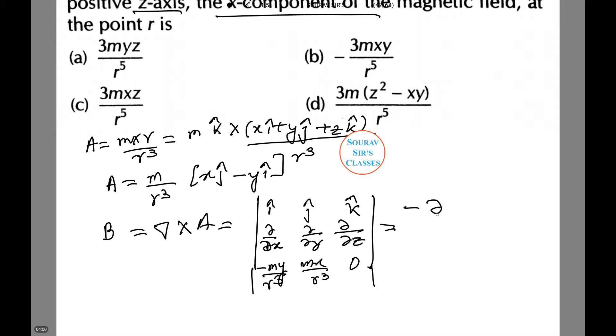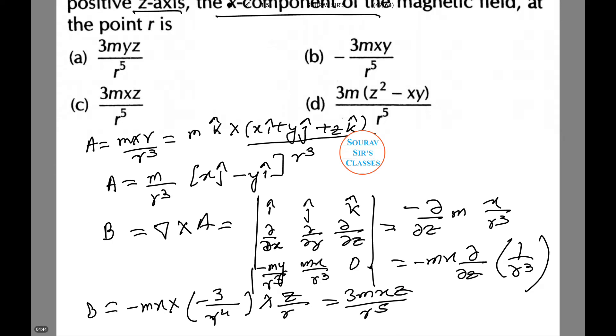This equals minus d by dz m x r cube, which equals minus m x delta by delta z 1 by r cube. Thus B equals minus m x into minus 3 by r to power 4 into z by r, which equals 3 m x z by r to power 5. That is option number c.